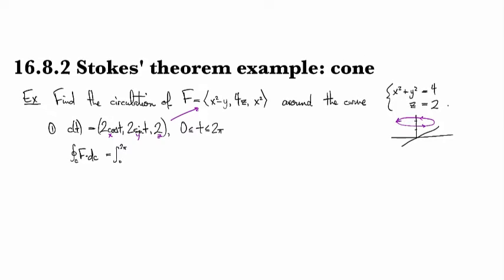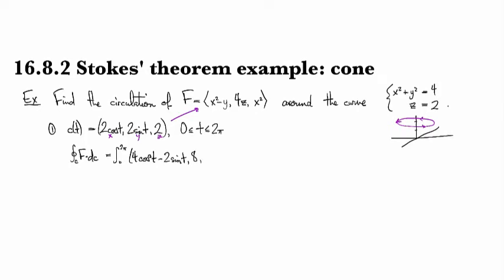then we're going to have to substitute in all of these functions, these x, y, and z coordinates into F right here. And so substituting those in, we can see 4 cosine²t - 2 sine t and then 8 and then 4 cosine²t.